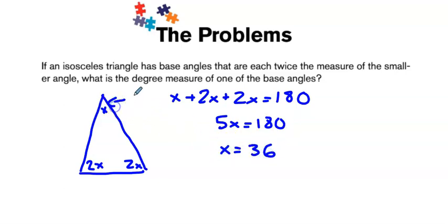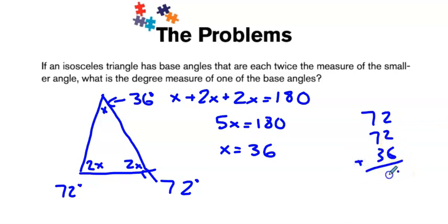Now, remember, this is our smaller angle, which means that our base angles are each double that, so 72 degrees. And it might be worth just adding them up on the side just to make sure that they do indeed add to 180, which they do. So, the sum of our angles is 180 degrees.